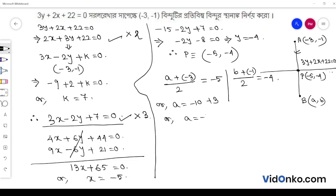A is equal to minus 10 plus 3, that means A value is minus 7. B is equal to minus 8 plus 1, B value is minus 7.